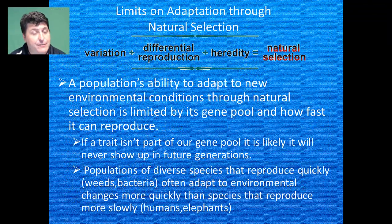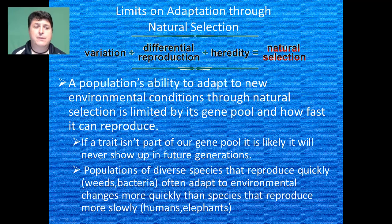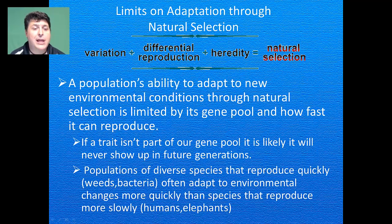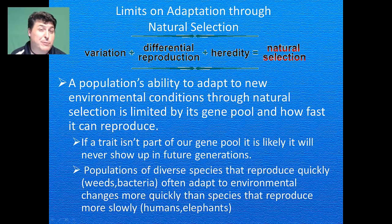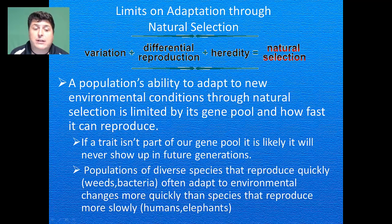There are many limitations to evolution by natural selection. A population's ability to adapt to new environmental conditions will be limited by its gene pool and how fast it can reproduce. If a trait isn't part of the gene pool, it's likely it will never show up in future generations. Populations of diverse species that reproduce quickly, like weeds or bacteria, often adapt to environmental conditions more quickly than species that reproduce more slowly and produce fewer offspring, like humans and elephants.